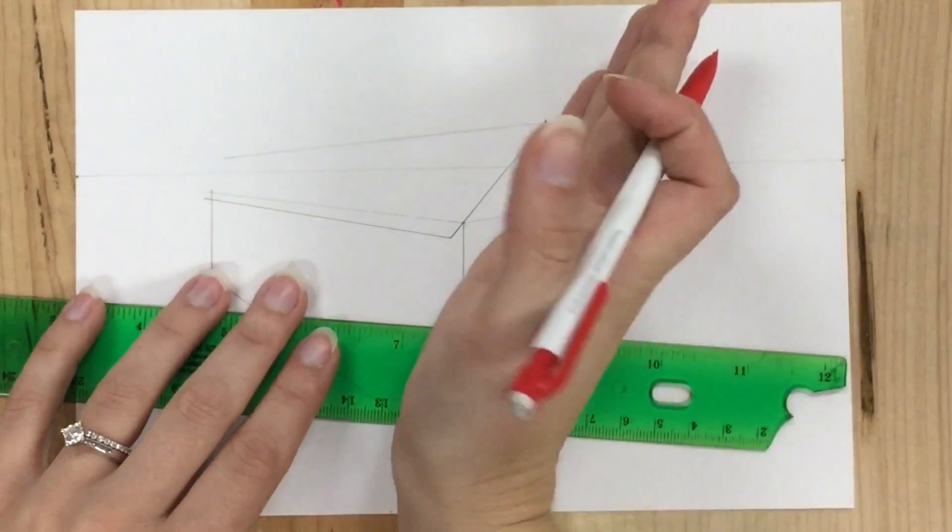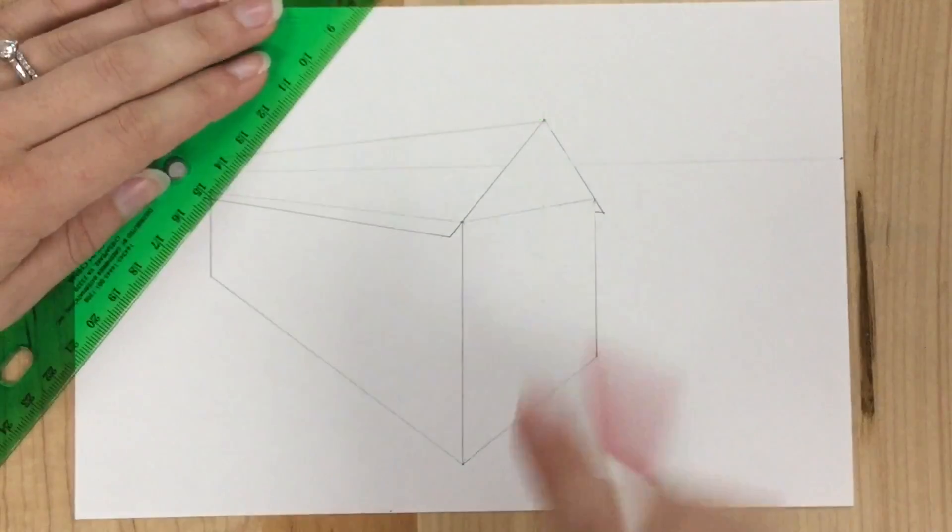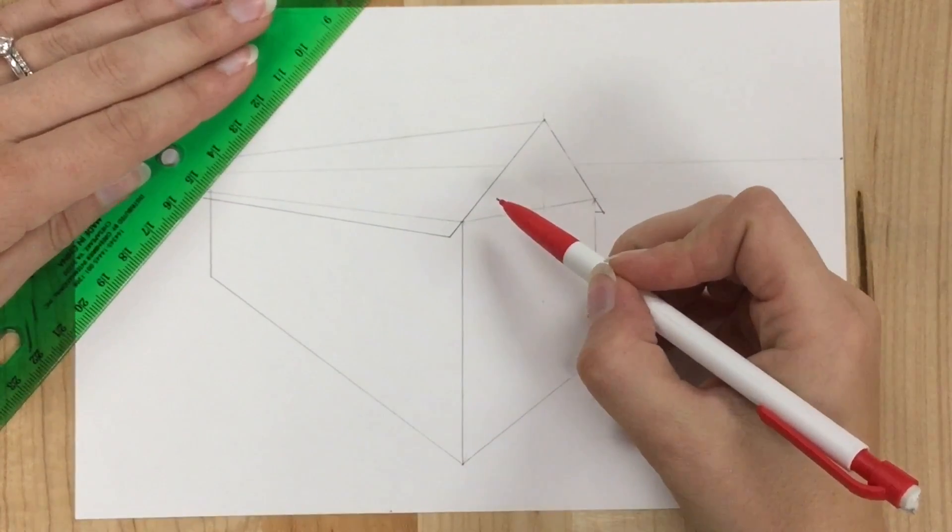Now I need to do a line parallel to this one but at that end. Parallel to this roof line to finish my roof.